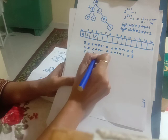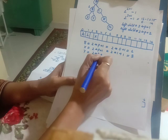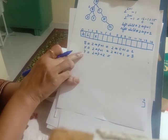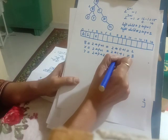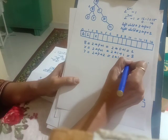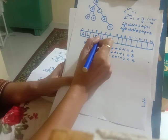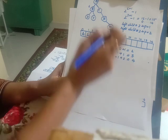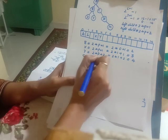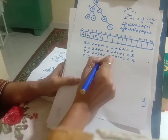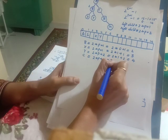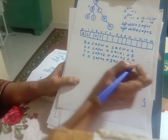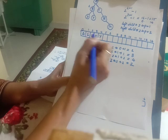Y is a right child, so the address will be 2 star p plus 2. For Y, the parent is B with address 1. So this becomes 2 star 1 plus 2, which equals 4. Y is stored at location 4. Coming to the right subtree, C is a right child with parent A at address 0. So 2 star 0 plus 2 equals 2. C is stored at location 2.